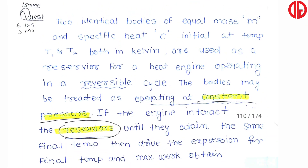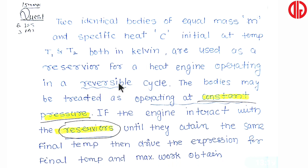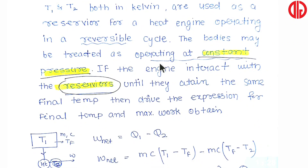Next question: two identical bodies of equal mass M and specific heat C with initial temperatures T1 and T2 (both in Kelvin) are used as reservoirs for a heat engine operating in a reversible cycle. The bodies may be treated as operating at constant pressure. The engine interacts with the reservoirs until they attain the same final temperature.